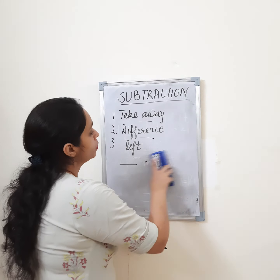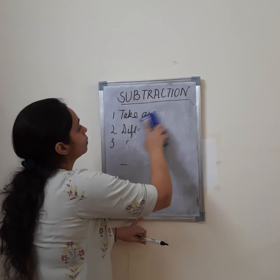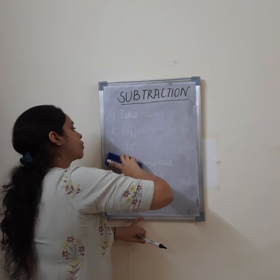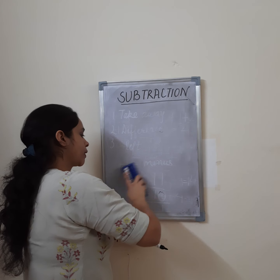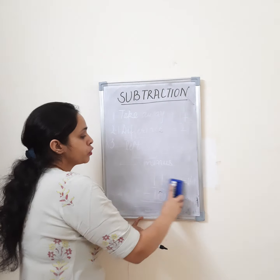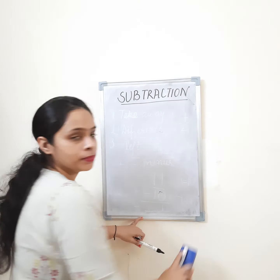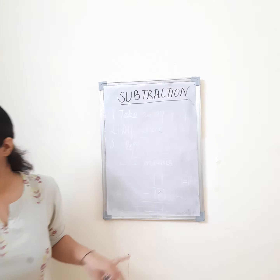We have done subtraction with 0 to 9 numbers before, and we did it with smaller numbers then. Now we are doing it with bigger numbers.